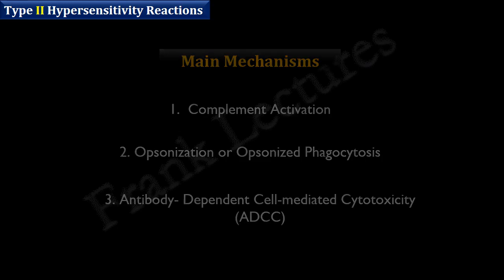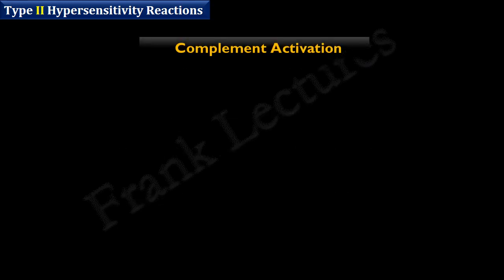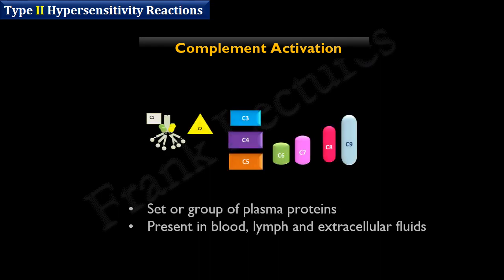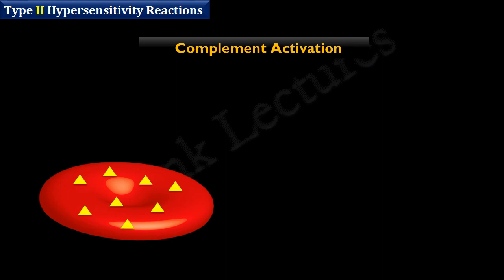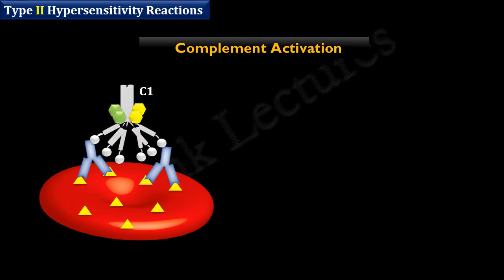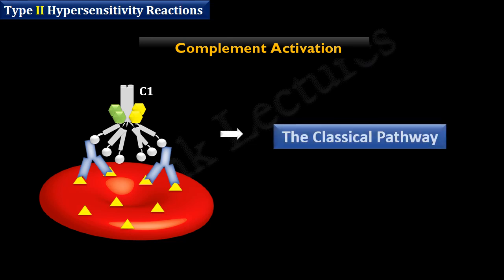Complement activation: recall that the complement system consists of a set of proteins in blood plasma that, through a cascade of enzymatic reactions, result in the destruction of target cells. Suppose this is a red blood cell — the antigens on this RBC are recognized by antibodies present in the individual. Antibodies bind to these antigens, and complement protein C1 binds to the Fc region of the bound antibodies, activating the classical complement pathway.